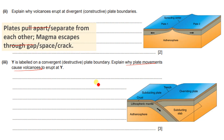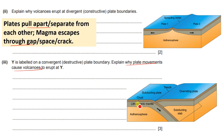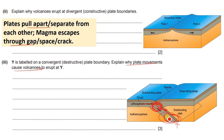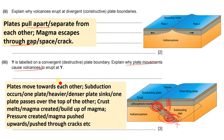At a convergent plate boundary, two plates move towards each other — one is oceanic, the other is continental. The oceanic plate moves beneath the continental plate because it is heavier and more dense, creating a subduction zone. As it moves down, heat from the mantle and friction melt the oceanic plate, leading to the formation of more viscous magma.